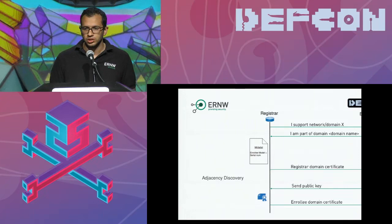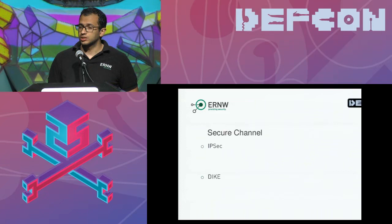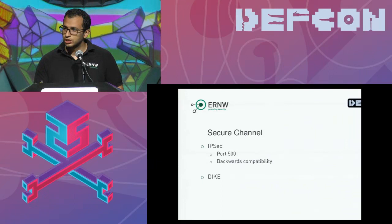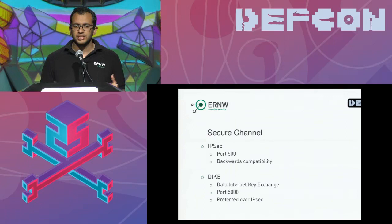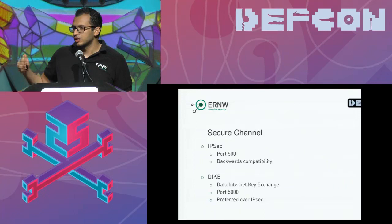After that, we build the secure channel with tunnel interfaces. Available technologies include IPsec, which Cisco treats as backward compatibility. Cisco introduced something new called DIKE — Data Internet Key Exchange — based on IKEv2, with the same characteristics as IPsec but only the second phase, so much less overhead. It runs on port 5000 and is always preferred over IPsec. Since the idea of autonomic networks is that people are the problem, everything is automated — you cannot change the order, and there isn't even a command to configure DIKE on Cisco routers.